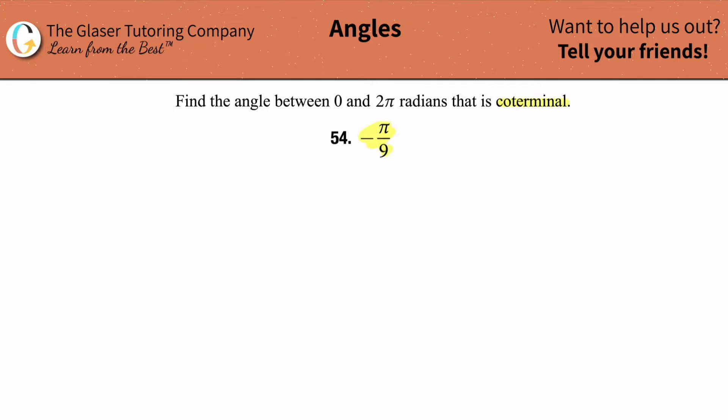First thing is to draw out your coordinate axes and label them with the respective radian measures. Now here's the thing, we're dealing with a negative angle, so you know we're rotating clockwise.